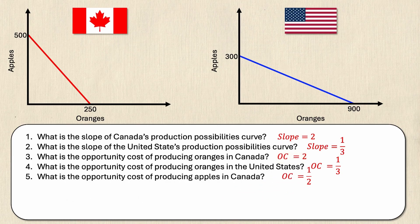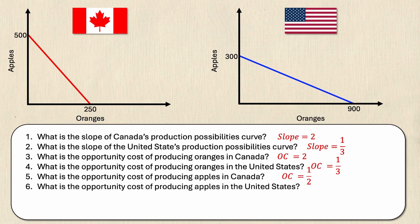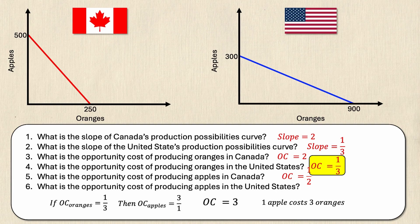Let's move on to question number six which asks for the opportunity cost of producing apples in the United States. And again you can just look at the opportunity cost of producing oranges and see that it's one over three. So if the opportunity cost of producing oranges is one over three and I want to flip that to get the reciprocal, that's going to give me three over one for apples which can just be reduced to three. And so I can interpret this as one apple costs three oranges. Again this will save you a lot of time because you don't have to recalculate sacrifice over gain. All you need to do is flip the fraction.